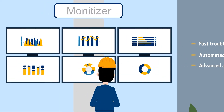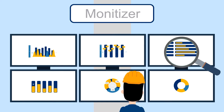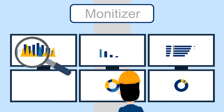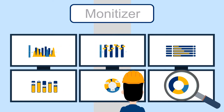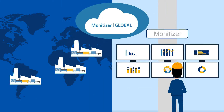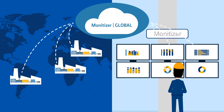You can easily analyse foundry data from today, last week or last year to find hidden insights and smarter ways of doing things. Manitizer Global brings data from different equipment and sites together. Now you can centrally monitor your KPIs, receive alerts and prevent stoppages and defects.